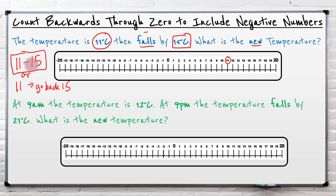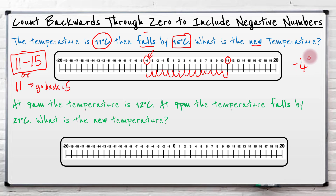So we start at eleven and it's going to fall, or we're going to take away fifteen, so I just do fifteen jumps: one, two, three, four, five, six, seven, eight, nine, ten, eleven, twelve, thirteen, fourteen, fifteen. Fifteen takes me to minus four. So if the temperature is eleven degrees Celsius and then falls by fifteen degrees Celsius, the new temperature will be minus four degrees Celsius. Just using that skill and using the number line makes it very easy to go through zero into your negatives.